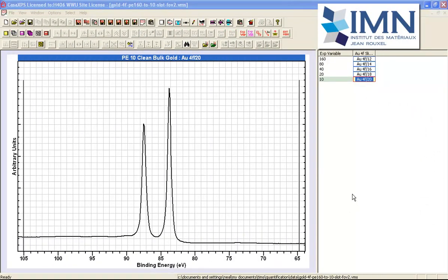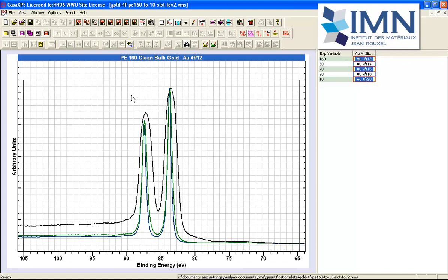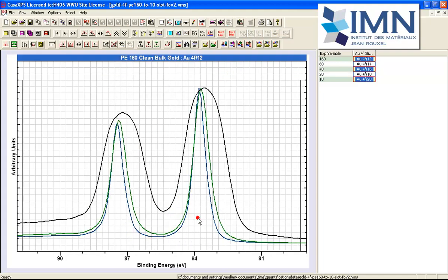The question is why does pass energy make a difference to the shape of these peaks? If we look at three different pass energies—160, 40, and 10—we end up with quite a substantial difference in the shapes of these peaks. The energy resolution changes and the intensity changes.